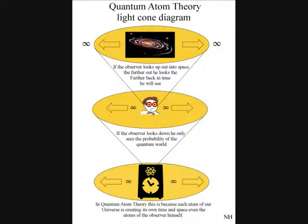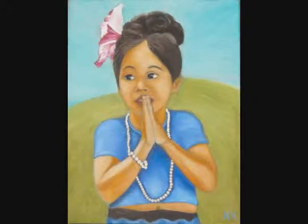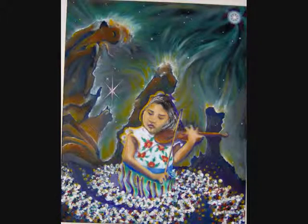It is because each atom of our universe is creating its own time that the observer can look back in time through light years of space. The individual observer is the only true reference frame because we are creating our own time and space relative to our position and momentum.